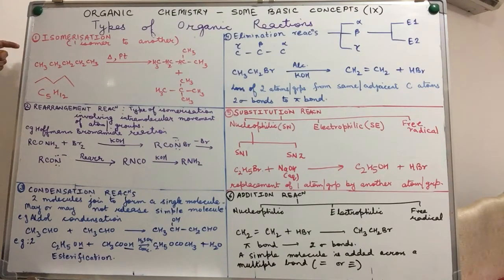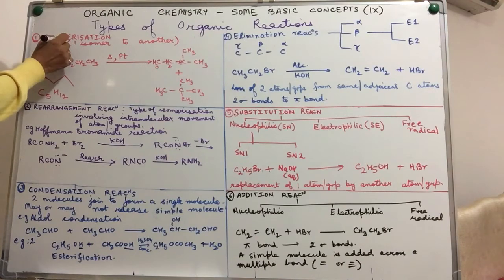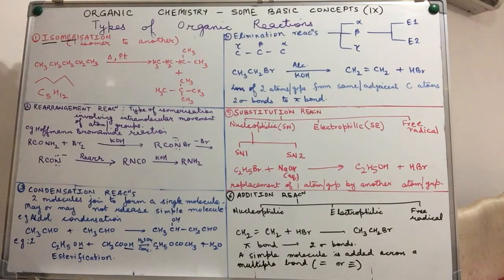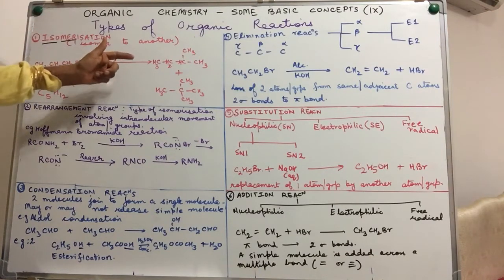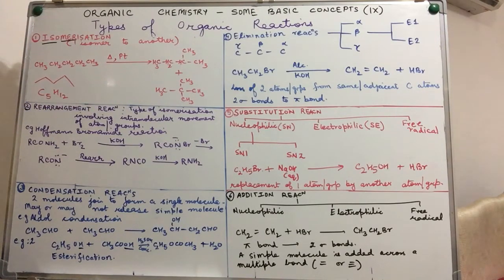Come to the first category, isomerization. Iso means same, mer means molecular formula, molecule. In other words, isomerization are those type of organic reactions wherein the compound, the organic compound gets converted into its isomers. Now these isomers can be structural, they can also be stereo isomers.